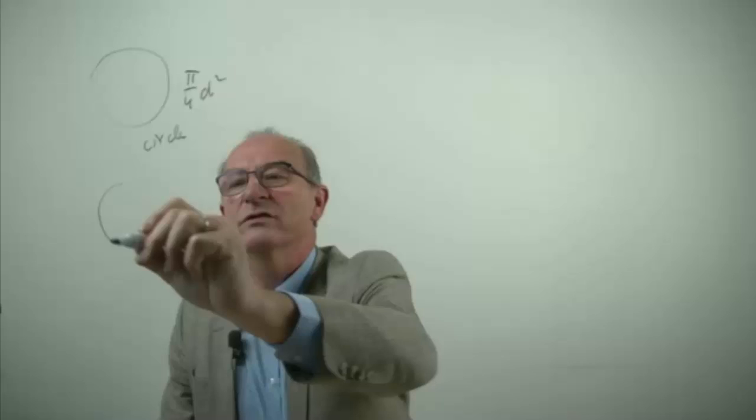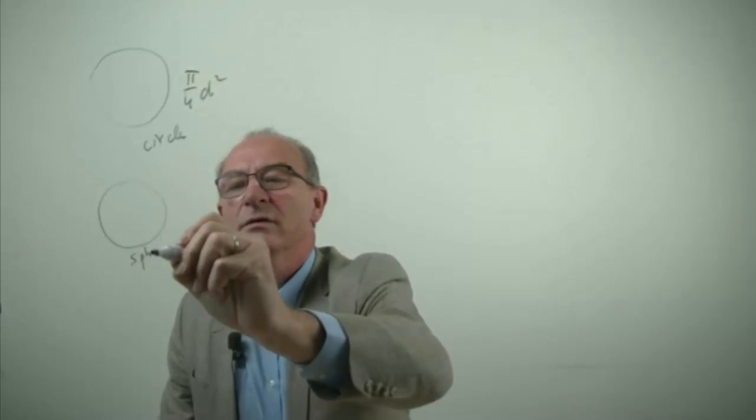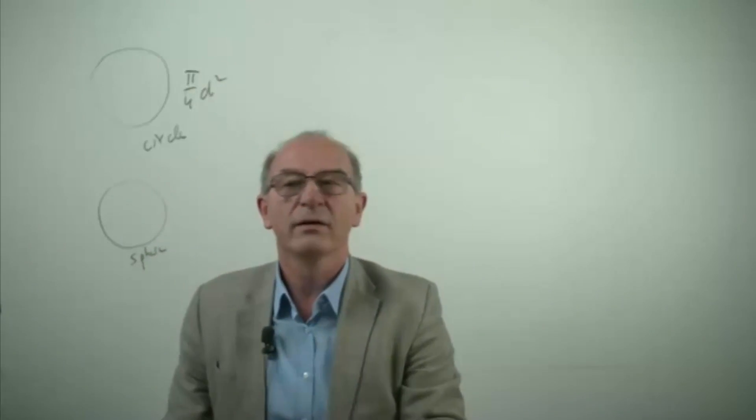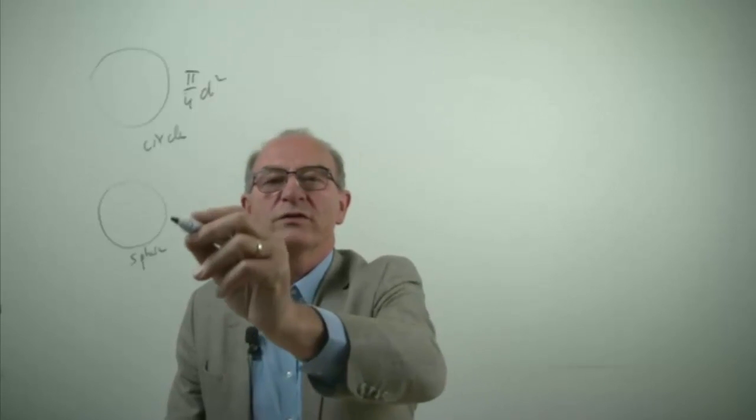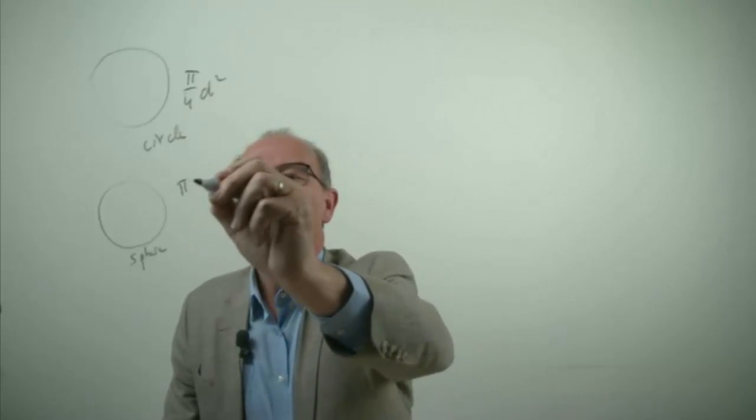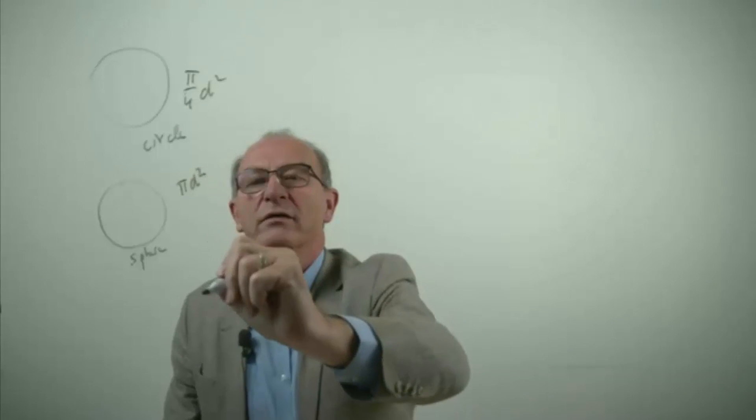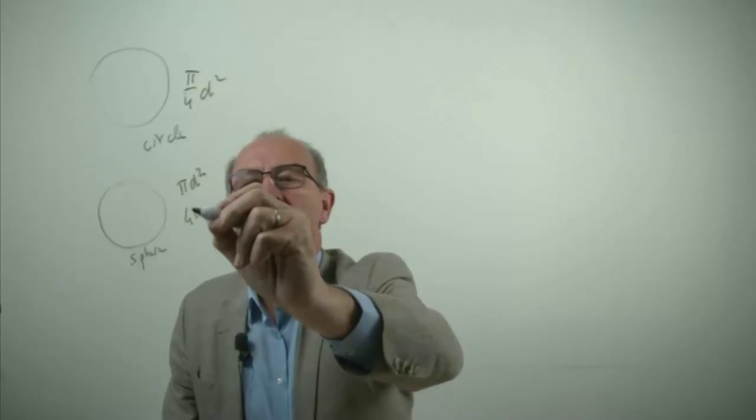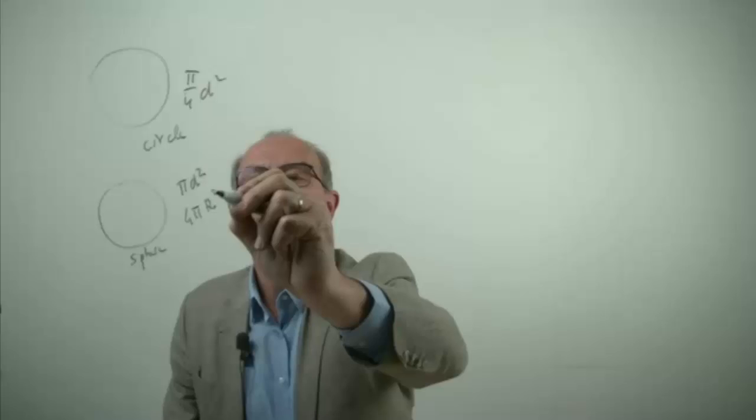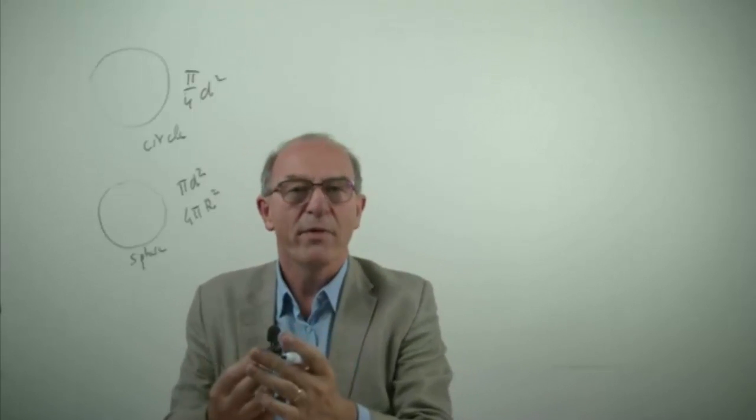But if I ask the surface area of a sphere, a lot of people start to think, well the surface area of a sphere is pi multiplied by d squared or 4 pi multiplied by the radius squared. But these are a few things to remember.